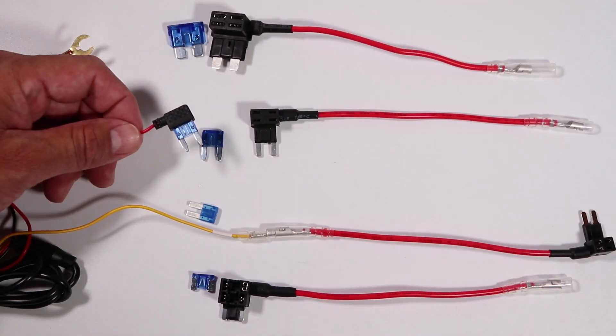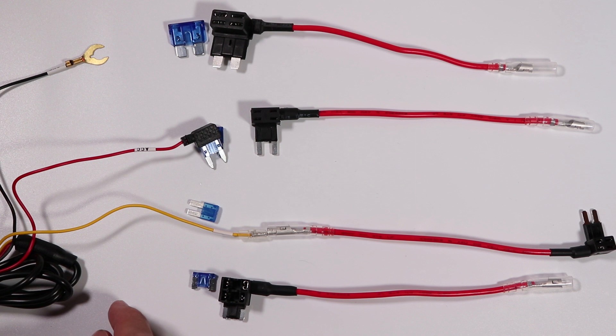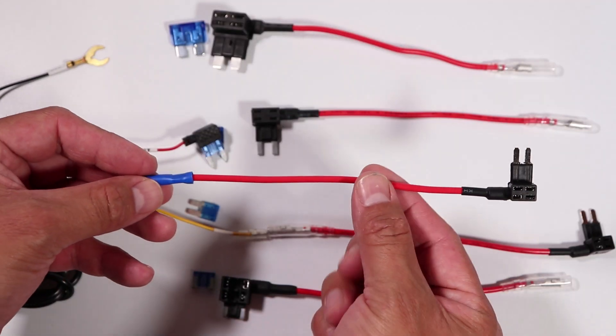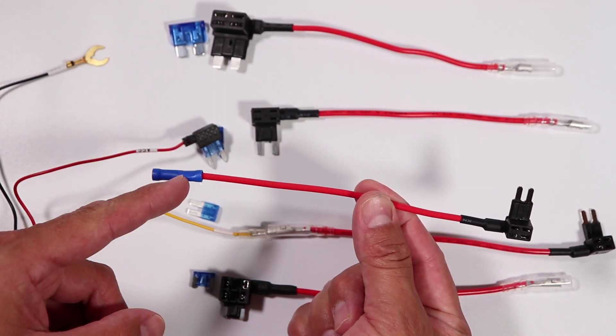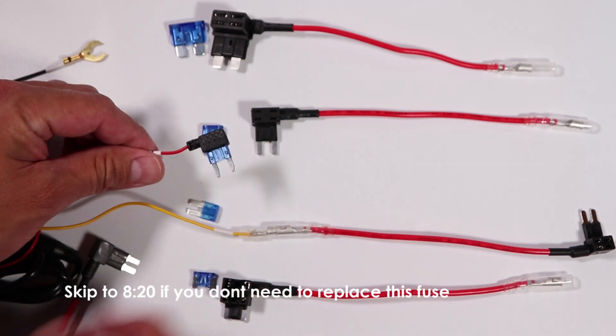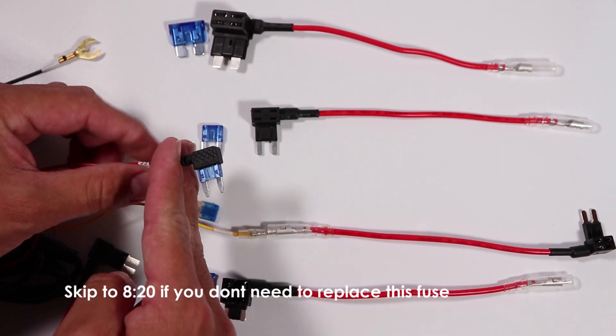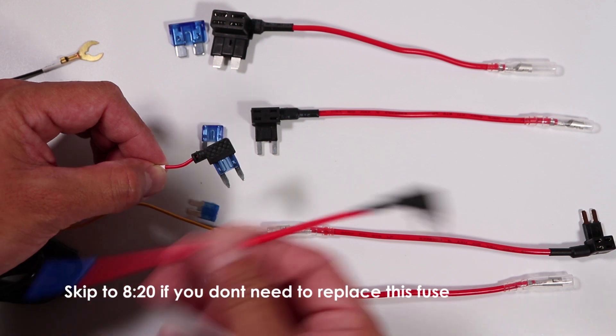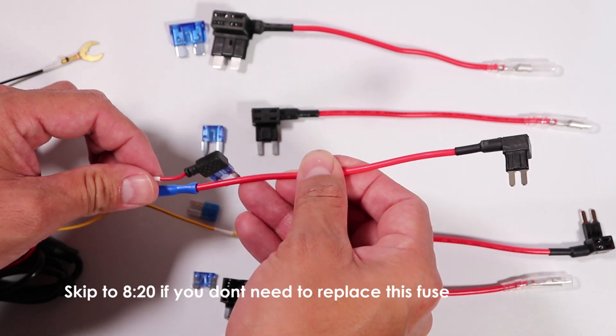Now, fortunately, it's not that hard to do so. Here is a quick fix for that. These fuse tabs have a crimp connection, so all I got to do, if this is not the right size, I'm going to cut it off, strip the wire, and install this over here, and I'll demonstrate how that looks.